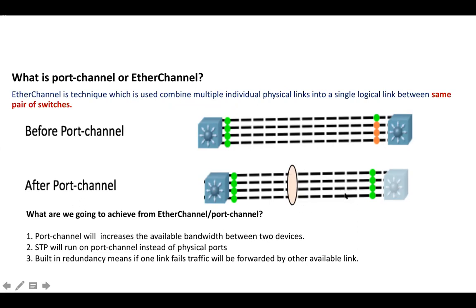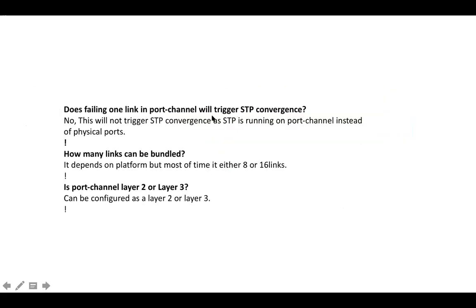Before port channel, three ports were in blocking state. After port channel, all physical ports are in forwarding state, which means we are increasing the bandwidth. STP is not running on physical ports anymore — instead, STP is running on the logical port channel interface. Apart from increasing bandwidth, port channel gives us built-in redundancy, meaning if one link fails, traffic will be forwarded by the other links. If a physical link fails, it will not trigger STP reconvergence. Port channel can be configured as layer two as well as layer three.